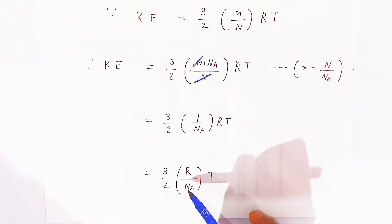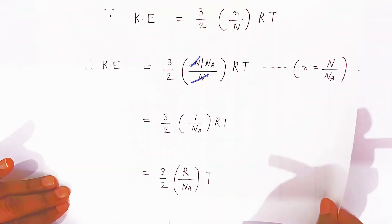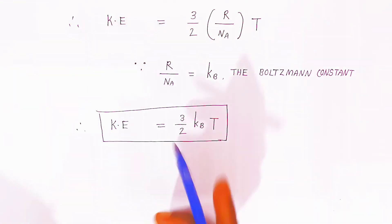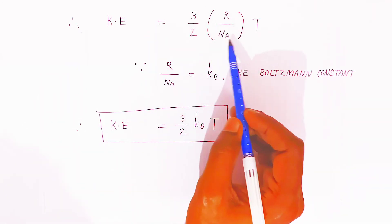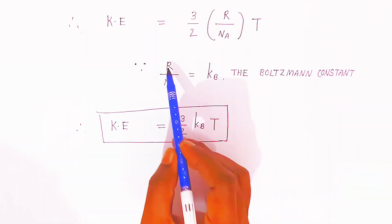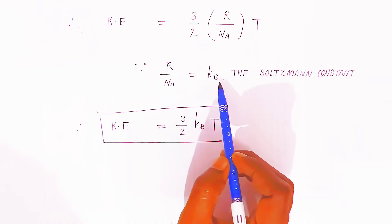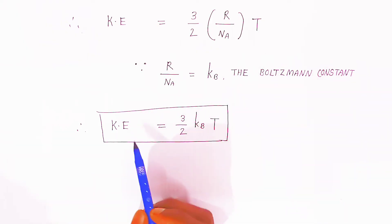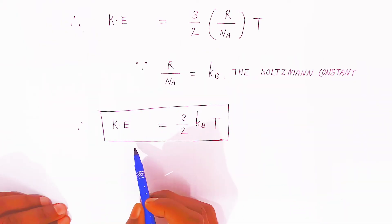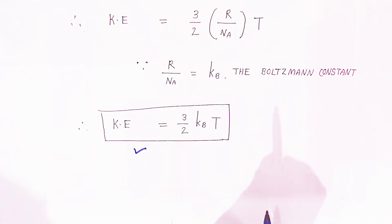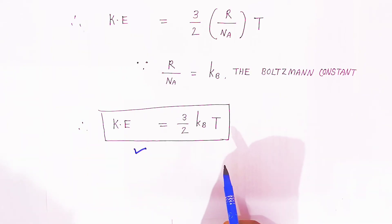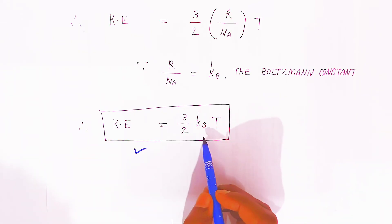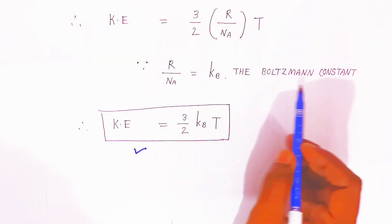Since R/N_A is the Boltzmann constant k_B, we get kinetic energy = (3/2)·k_B·T. This is the kinetic energy per molecule of an ideal gas, where k_B is the Boltzmann constant.